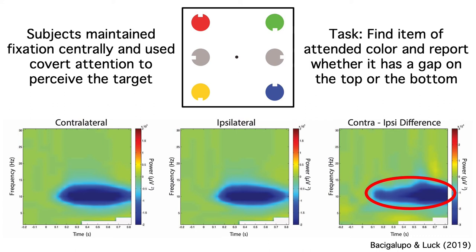By using time frequency analysis, Felix was able to see this contralateral suppression of alpha band activity that was invisible in the conventional ERP waveforms. We had done dozens of N2PC experiments over the years, and this contralateral alpha suppression was probably there in most of them, but we couldn't see it because it's invisible in a conventional average ERP.